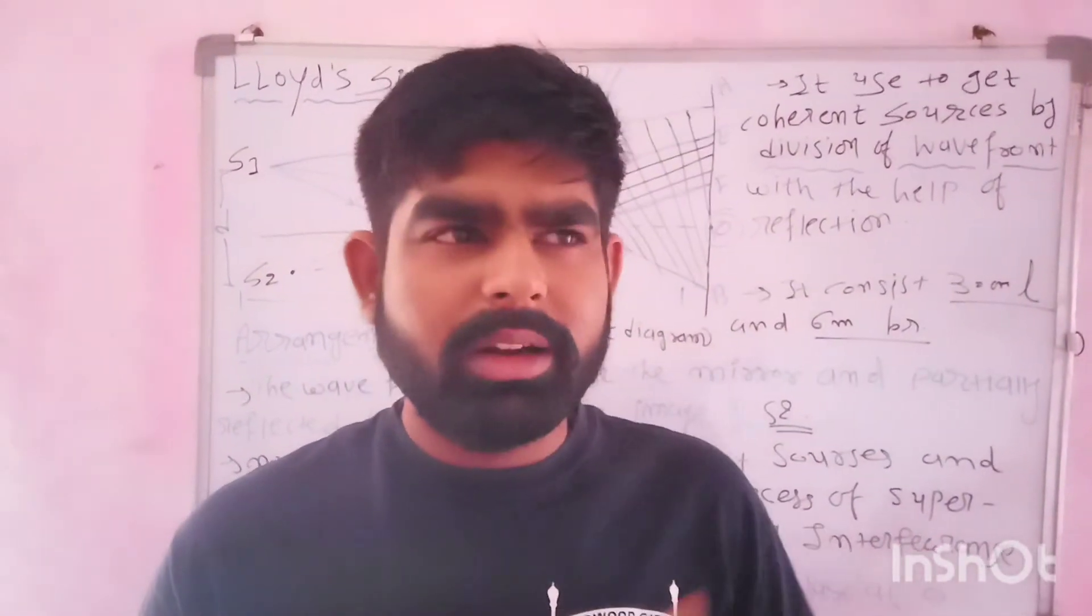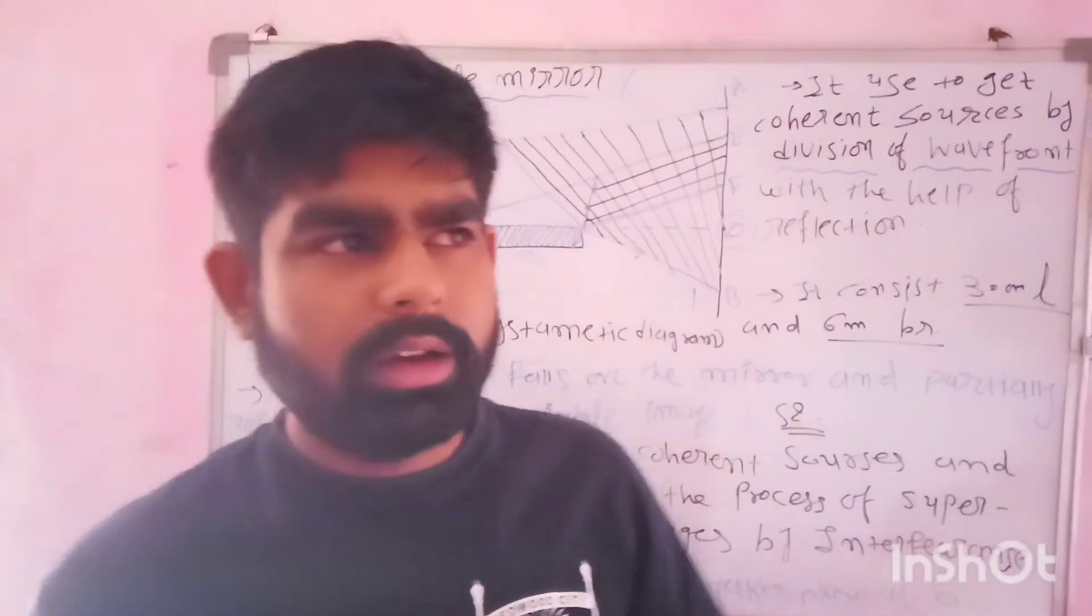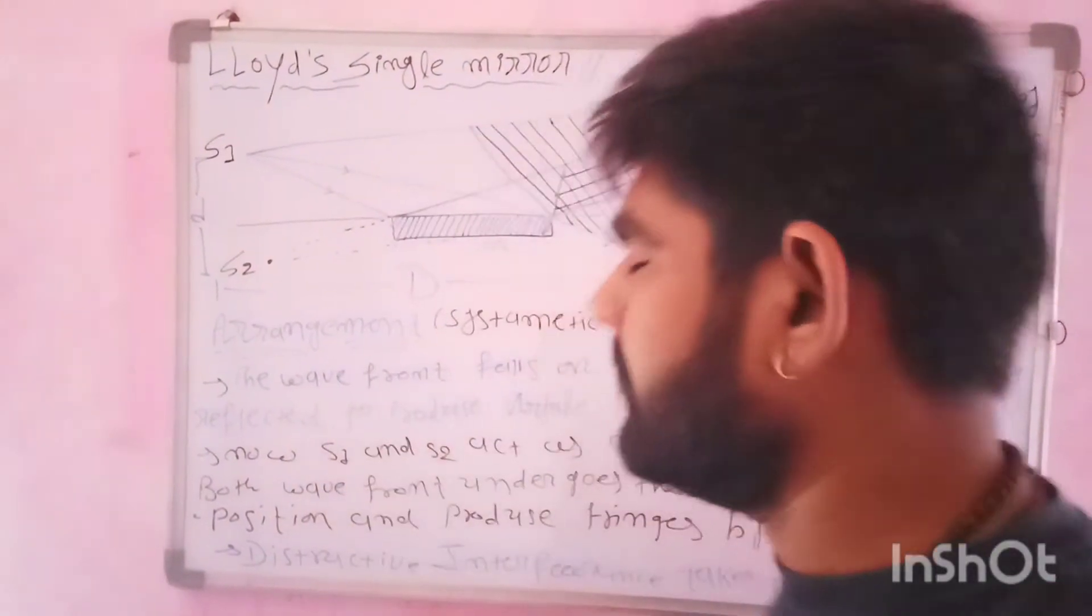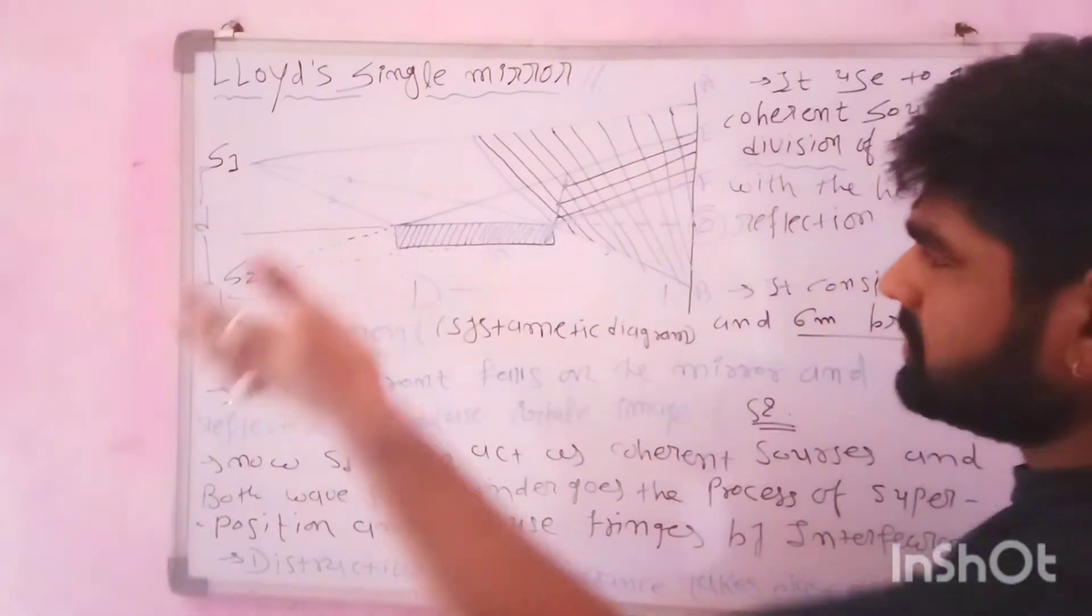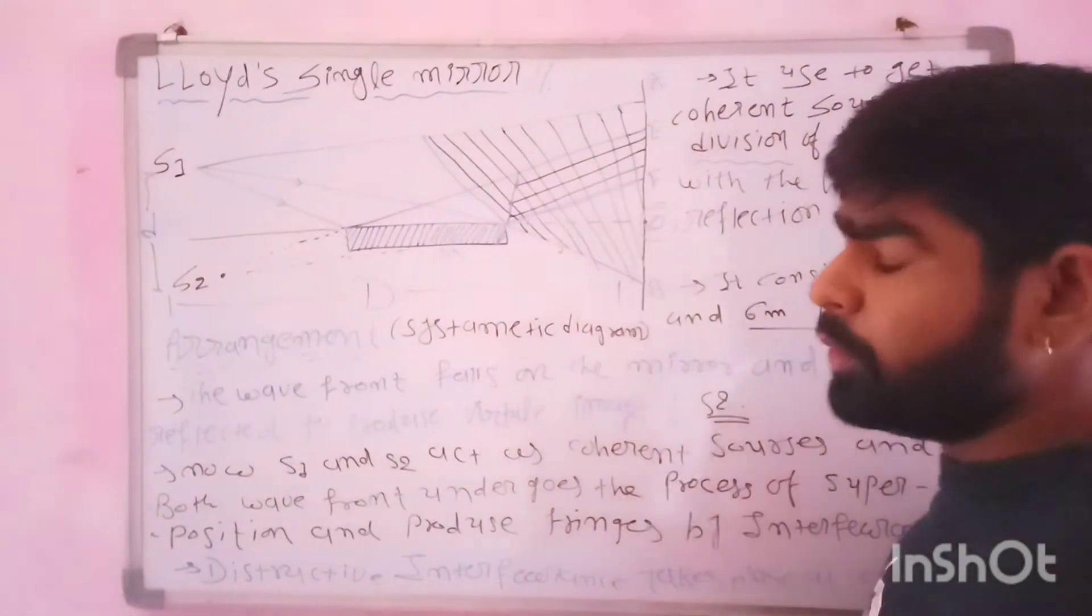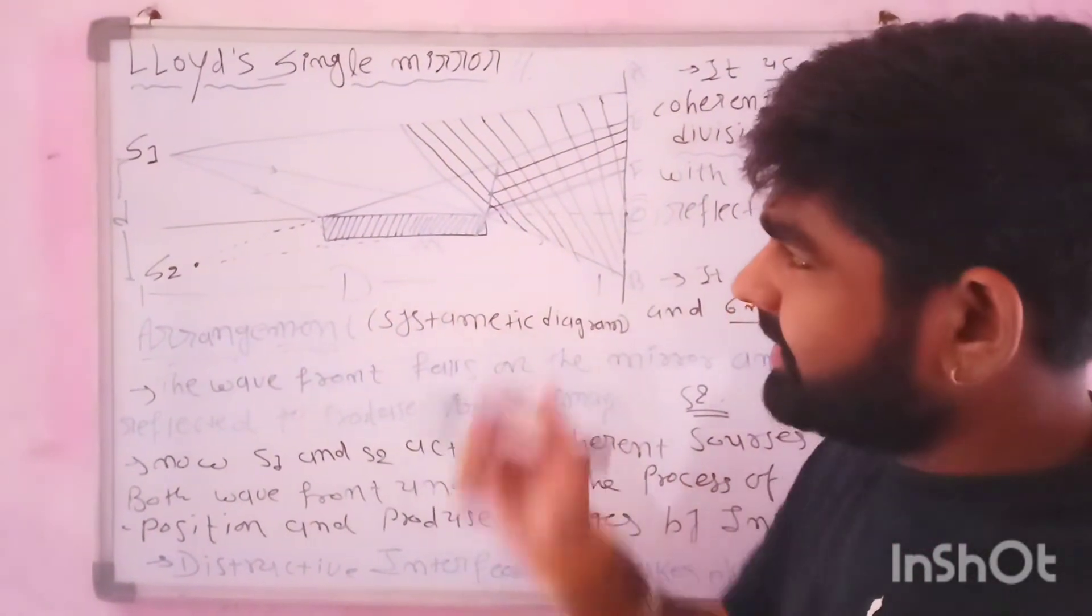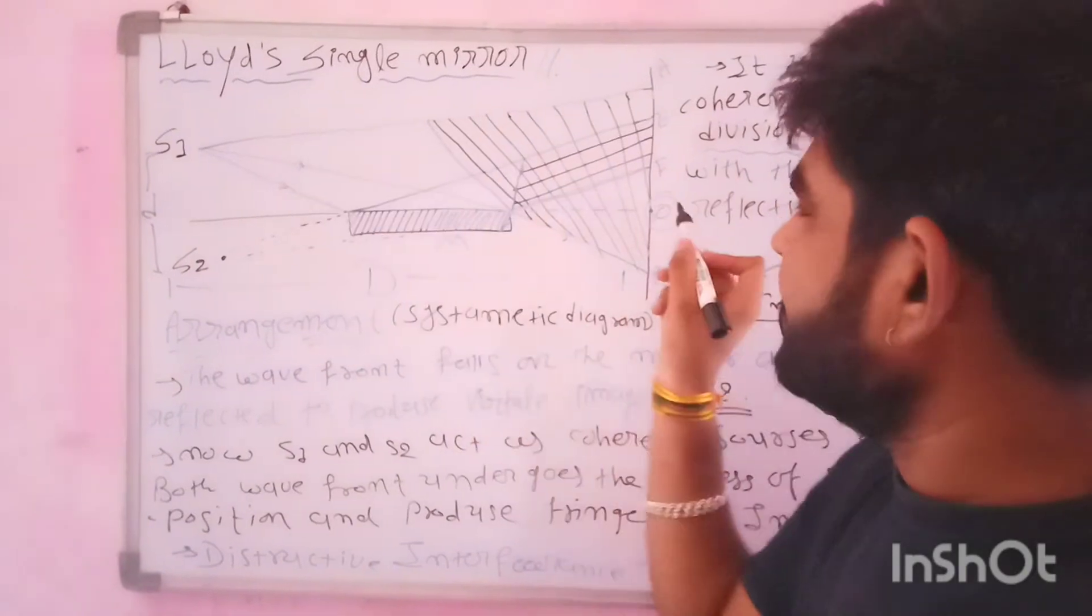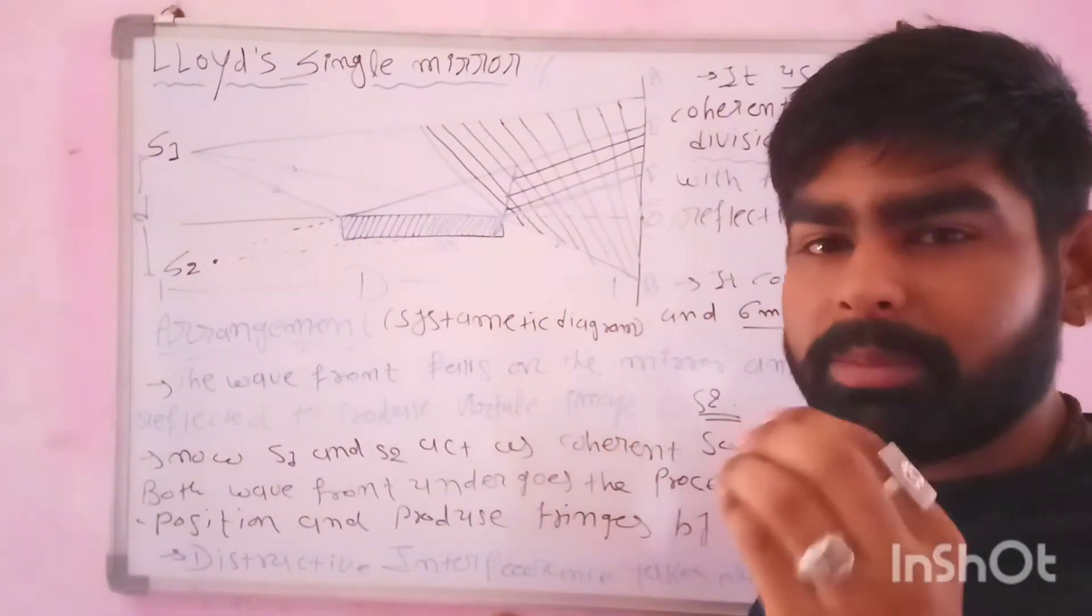We have done experiments in the previous years, the Young double slit experiment. And in the previous lecture we had a question about the Fresnel biprism. What happens is that the fringes, central maxima, they become dark. But here in the Lloyd-Singer mirror, the central maxima will be bright.